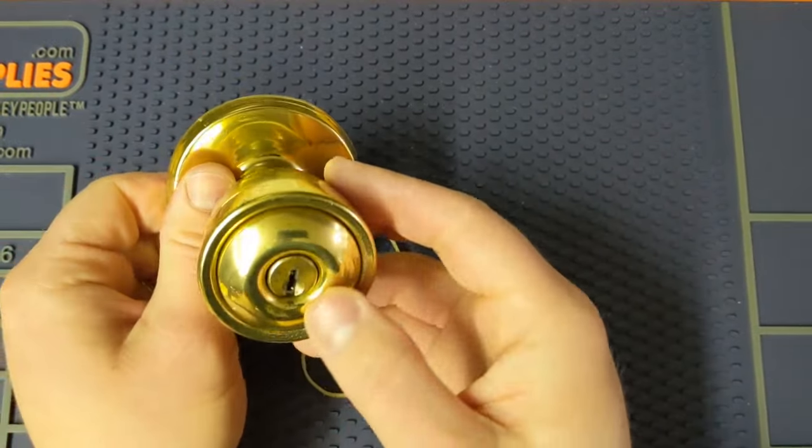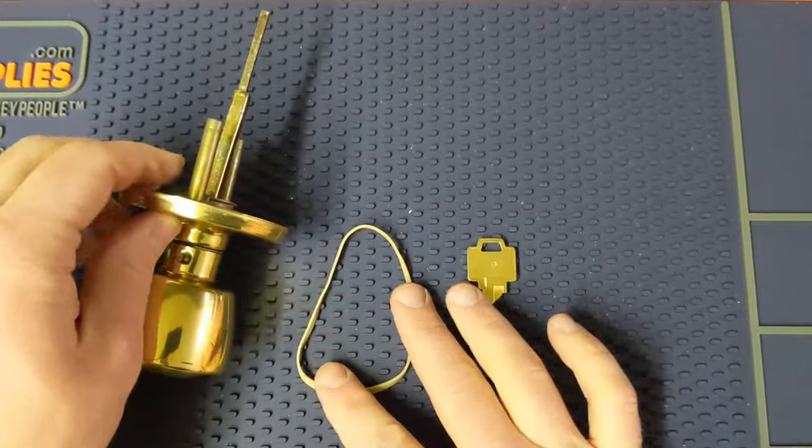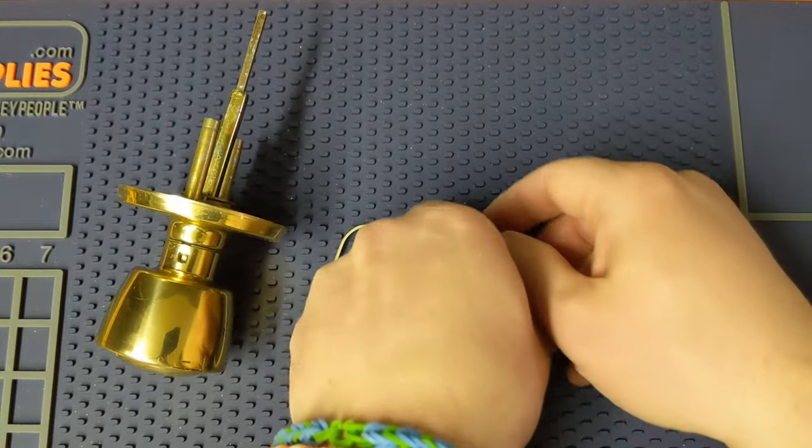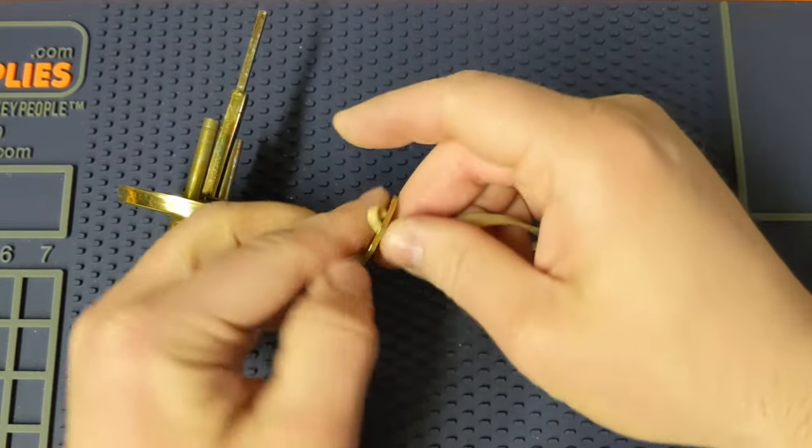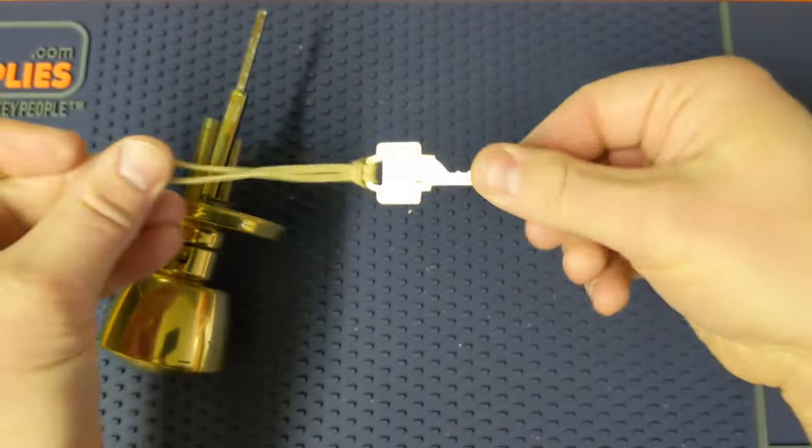Alright, so to get this Weiser knob cylinder out, what we're going to need is a rubber band and a WR5 key cut to all nines. What we're going to want to do is take the rubber band, put it through the key ring hole here and make it look like this.